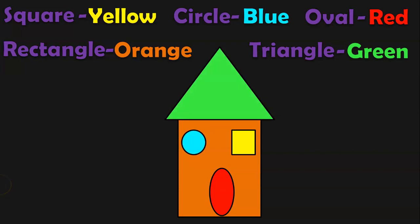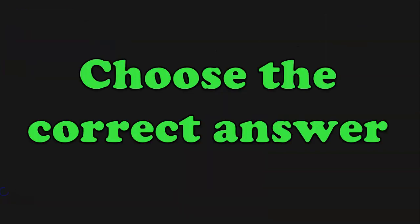We have a beautiful colorful house here. This activity is very interesting and important for the children because it helps to identify the shapes, choose the correct color according to the instructions and color the shapes accordingly. Next, the activity that we are going to do is choose the correct answer.